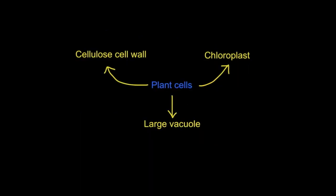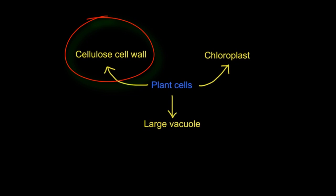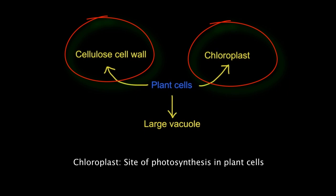If this were a plant cell, we would also see a plant cell wall made of cellulose and another membrane-bound organelle called a chloroplast, which is the site of photosynthesis. These are only found in plant cells.